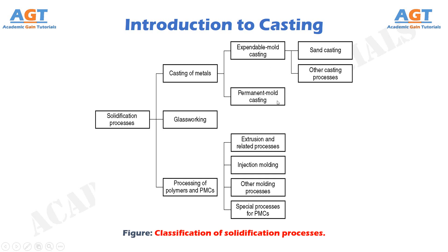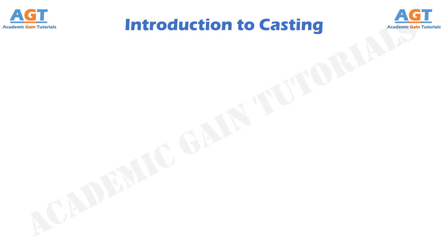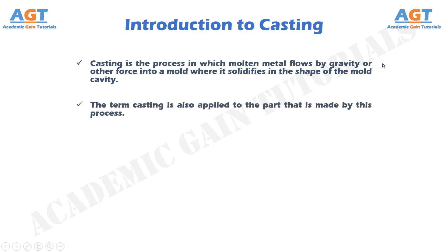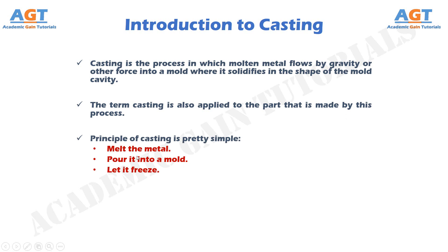Casting is the process in which molten metal flows by gravity or other force into a mold where it solidifies in the shape of the mold cavity. The term casting is also applied to the part that is made by this process. The principle of casting is pretty simple: melt the metal, pour it into a mold, let it freeze.